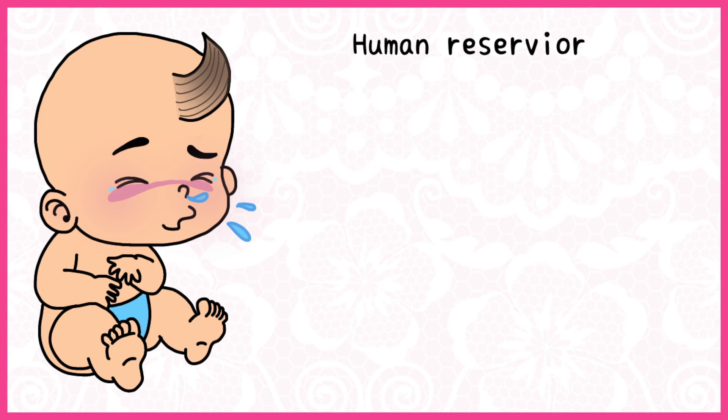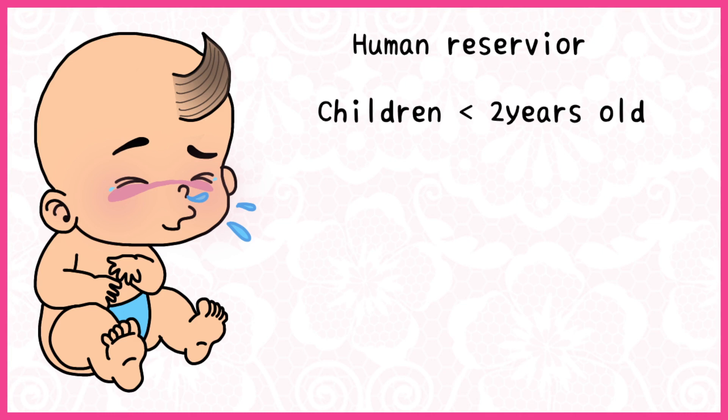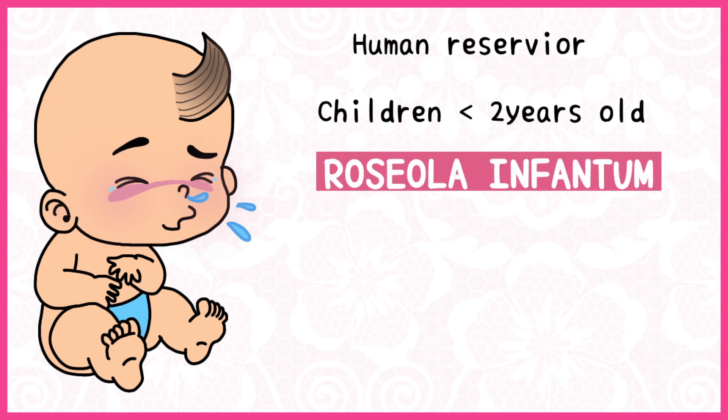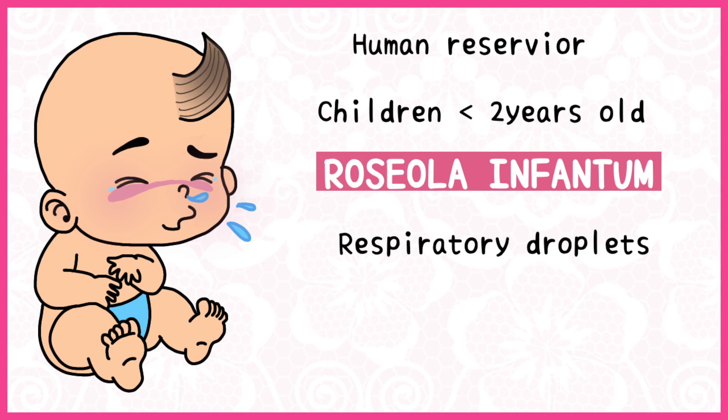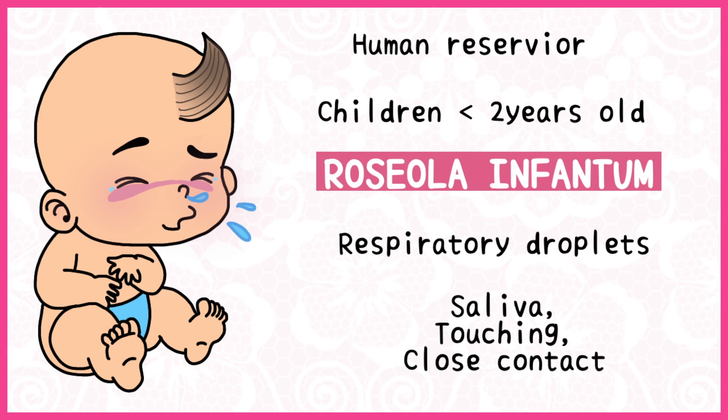The virus, like the rest of its family, is found in a human reservoir. In most cases, it affects children under 2 years of age or infants, which is why it is also called roseola infantum. The disease spreads through airborne respiratory droplets and can be very easily transmitted by cuddling and kissing a cute little baby, because saliva, touching, and close contact also help spread the infection.